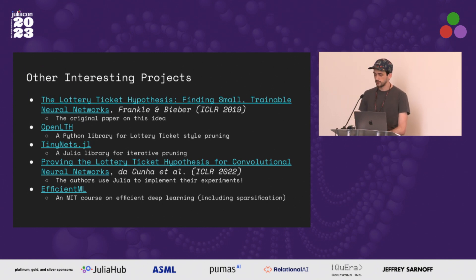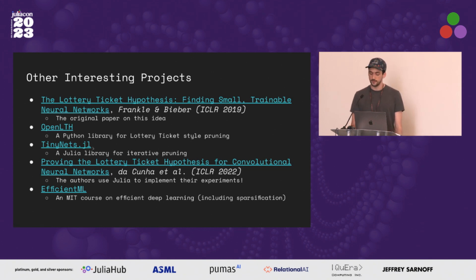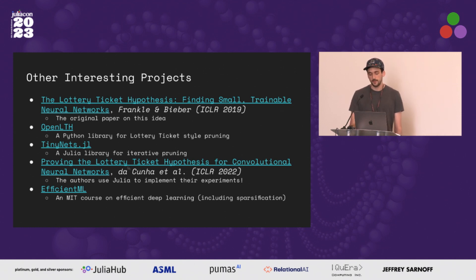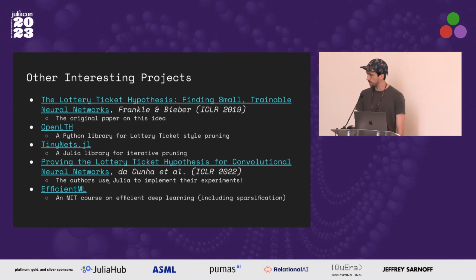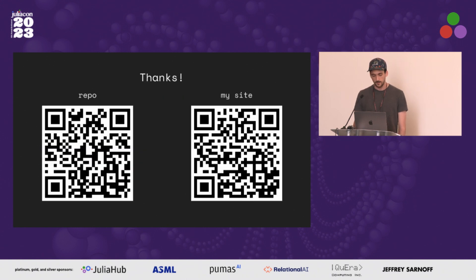Here are a few interesting related projects. There's the original lottery ticket hypothesis paper and a Python library by those authors. There's also tinynets.jl, another iterative pruning library that does something similar. There's a paper on a stronger version of the lottery ticket hypothesis whose authors actually used Julia for their experiments. And finally, there's an MIT course on efficient deep learning that surveys this entire field. The repo and my personal site are linked on the slide.